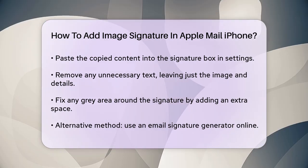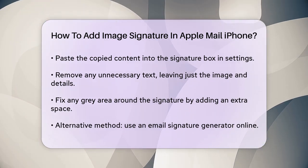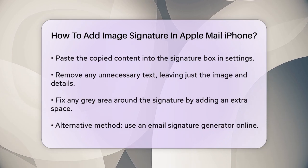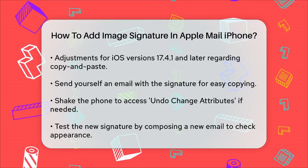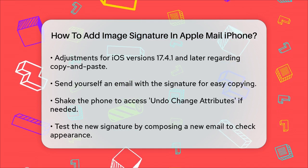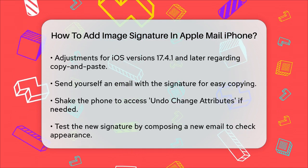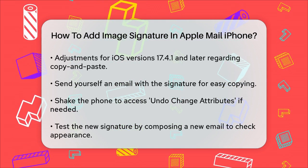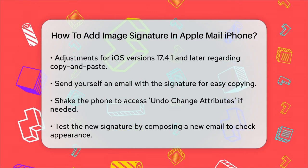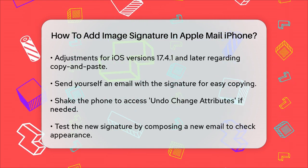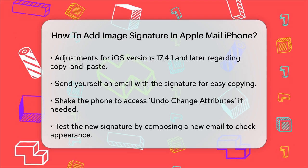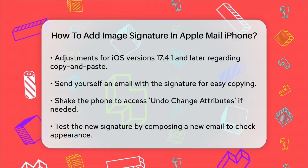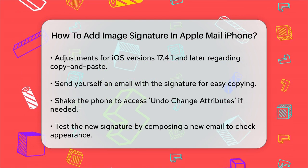For iOS versions 17.1 and later, there's a slight tweak due to changes in copy and paste settings. You might need to send yourself an email with the signature shown. Open it on your iPhone, select all the text and image, copy it, and then paste it into the Signature settings. If the image displays as a blue checkmark, physically shake your phone to get the Undo Change Attributes option and select Undo to fix it.